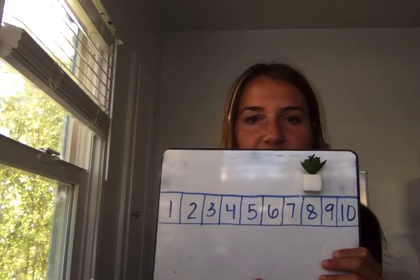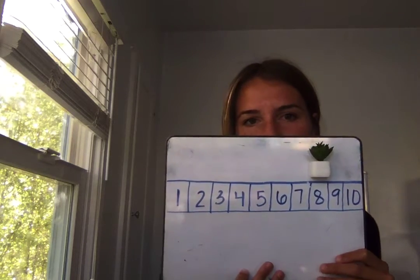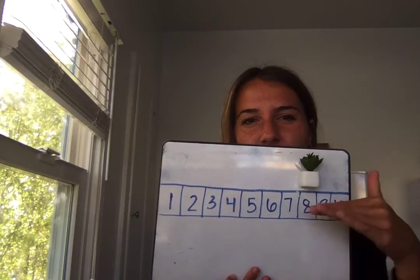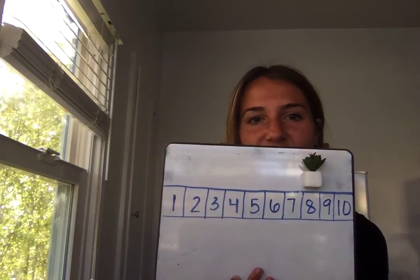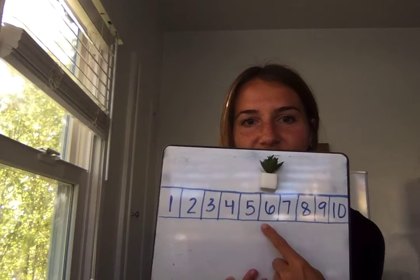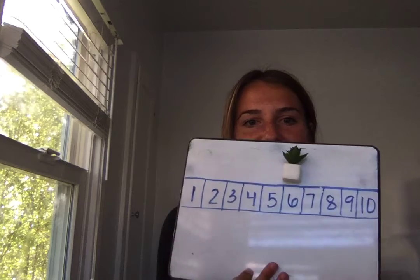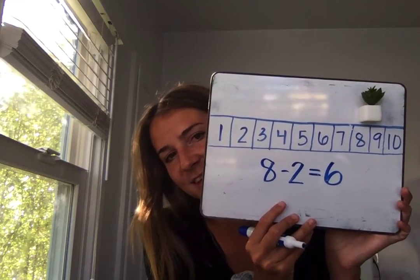Now let's try a different way — a subtraction sentence. I'll leave my succulent on eight and subtract two. Before, when I showed addition, I went forward. But when I show subtraction, which way do you think I have to go? I have to go backwards towards the number one. So if I start on eight and take away two — one, two — where do I end up? That's my answer: six. Can you write a number sentence about that? We'll need our subtraction sign: eight minus two equals six. Give me a check if your number sentence looks like that.